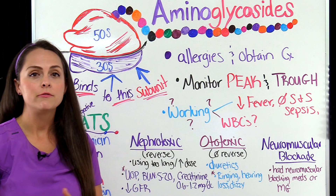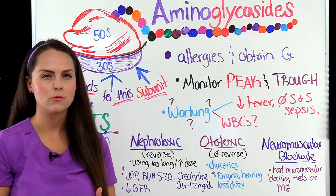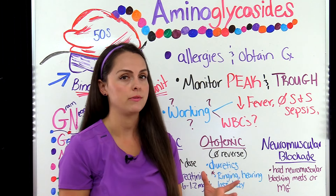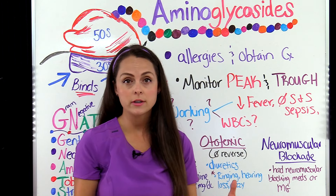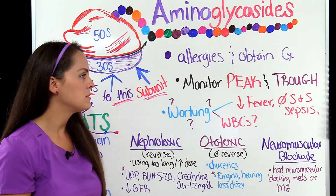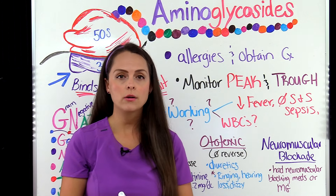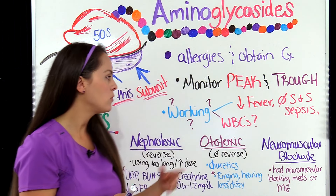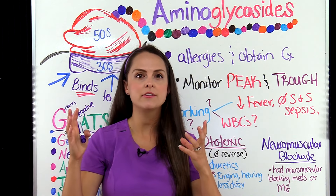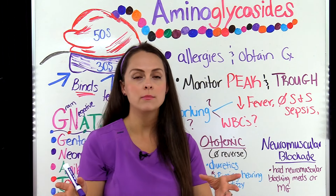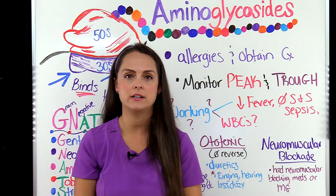You also want to monitor whether the medication is working as it should. Signs that it's treating the infection include: the patient no longer has a fever, they don't show signs and symptoms of sepsis — blood pressure is within normal range and not hypotensive, heart rate is within normal range and not tachycardic — and their white blood count is in normal range, like 5,000 to 10,000. Anything greater than that tells us the white blood cells are responding to a massive infection.